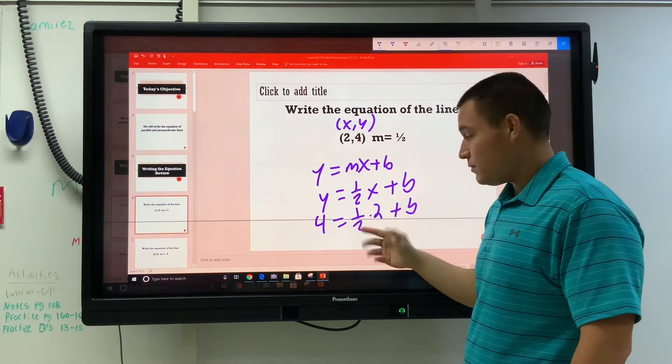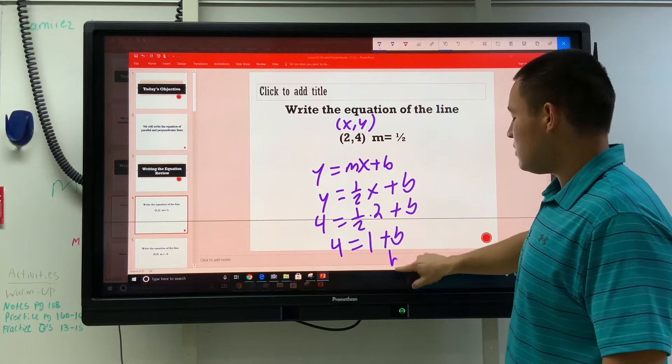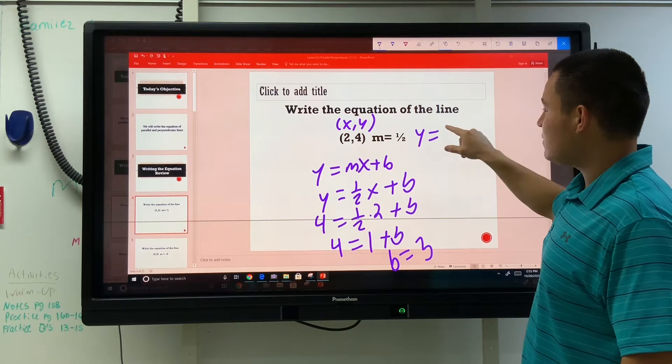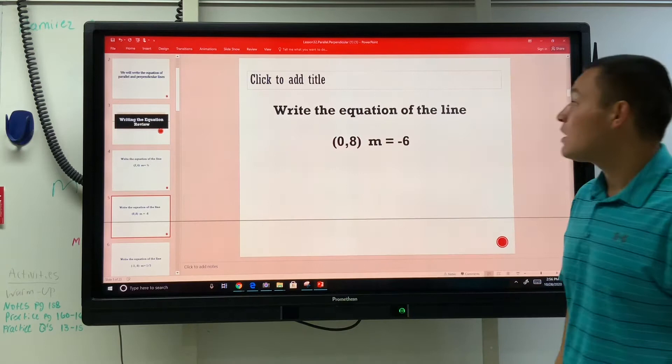4 is equal to 1 half of 2. What's half of 2? 1. 4 is equal to 1 plus b. How much does b need to be? 3. b is equal to 3, so then the real equation for this line is y equals 1 half x plus 3. Not so bad, let's do it again.